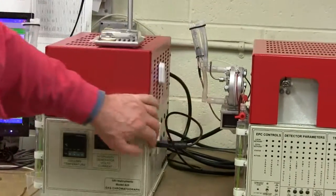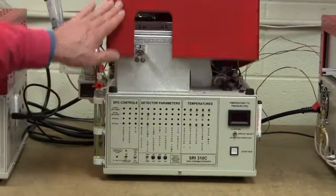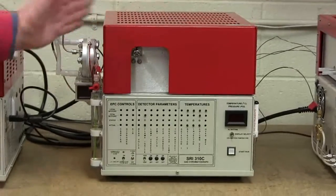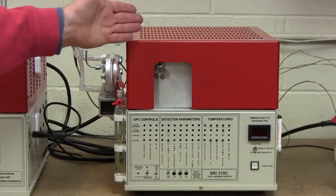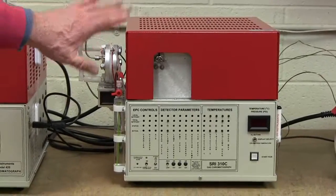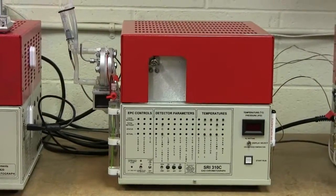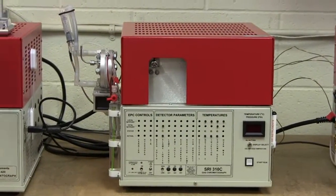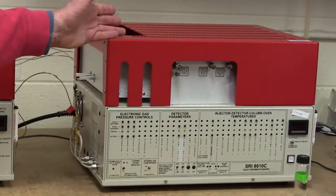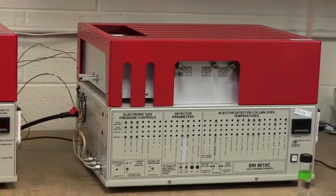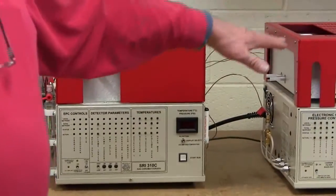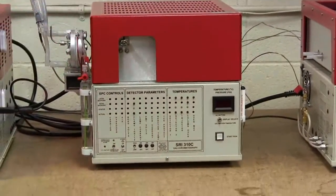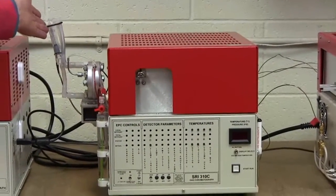We make a slightly more powerful GC called the Model 310 that also includes the built-in hydrogen generator. The Model 310 is kind of a compromise between the Model 420, which is $5,000, and our more professional model, which is $12,000 and up. So the Model 310 is $10,000, and it lets you do pretty much everything that you can do with the professional model, but also includes the built-in hydrogen generator.